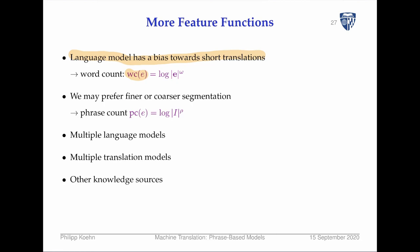Maybe you give it a negative weight saying we want to produce a lot of words. Another feature is how many phrases are we using — maybe we prefer a model that uses large phrases or short phrases. What's always done is using multiple language models, multiple translation models, or any other knowledge sources. This becomes like a toolbox where you can throw in any feature, and as long as you can efficiently compute it during decoding, it's fair to try it out.